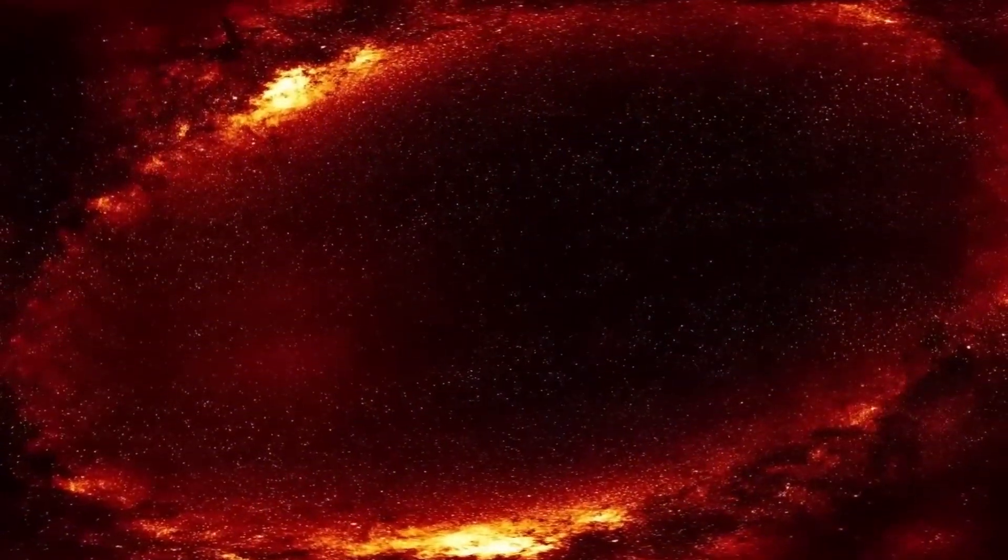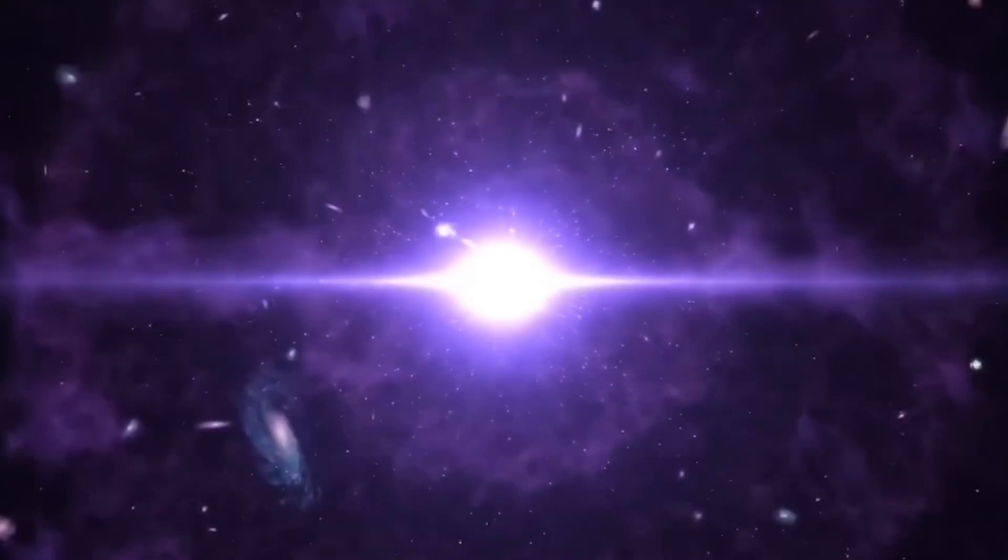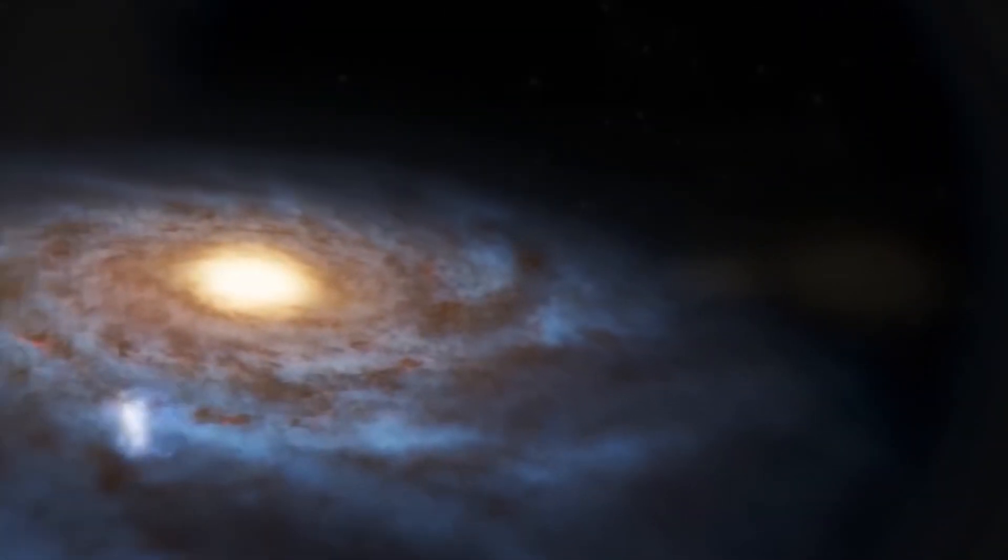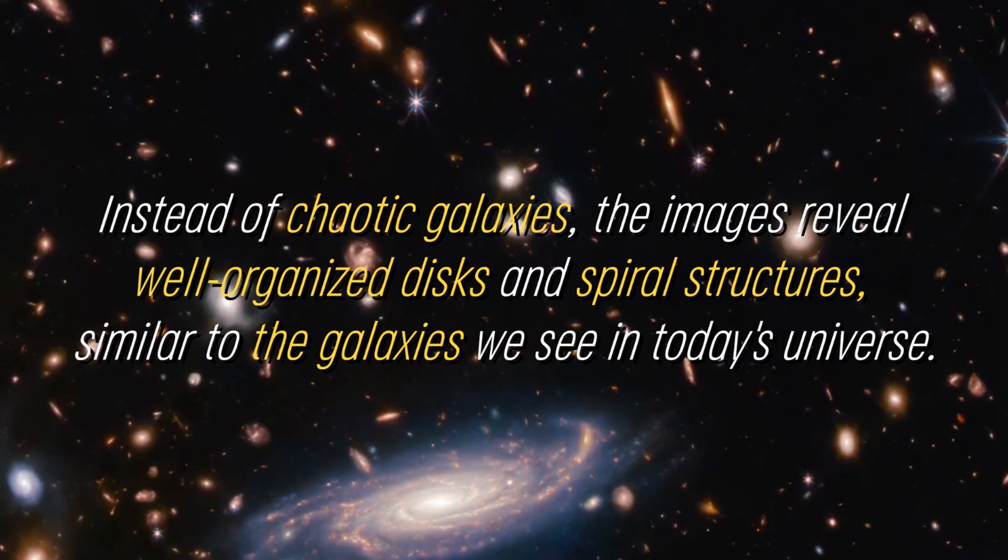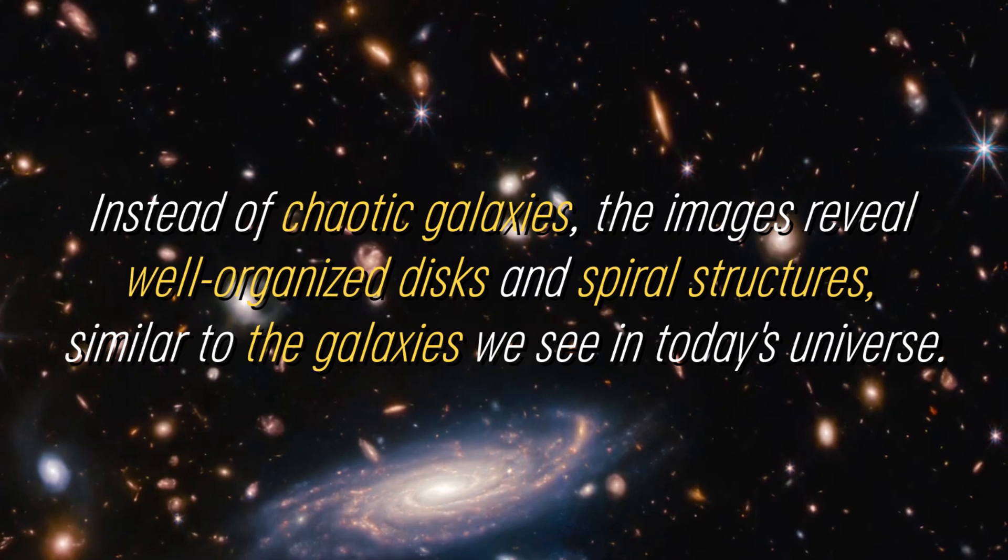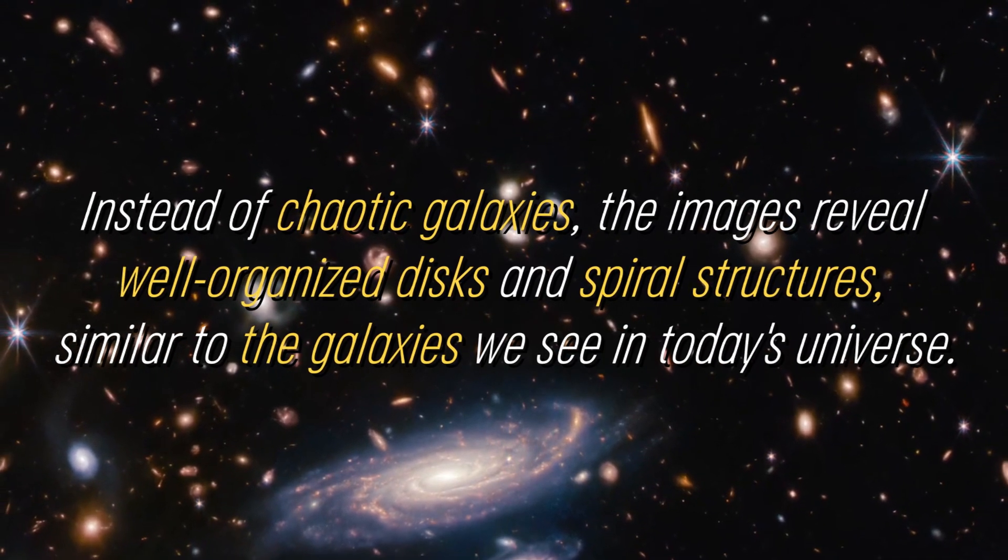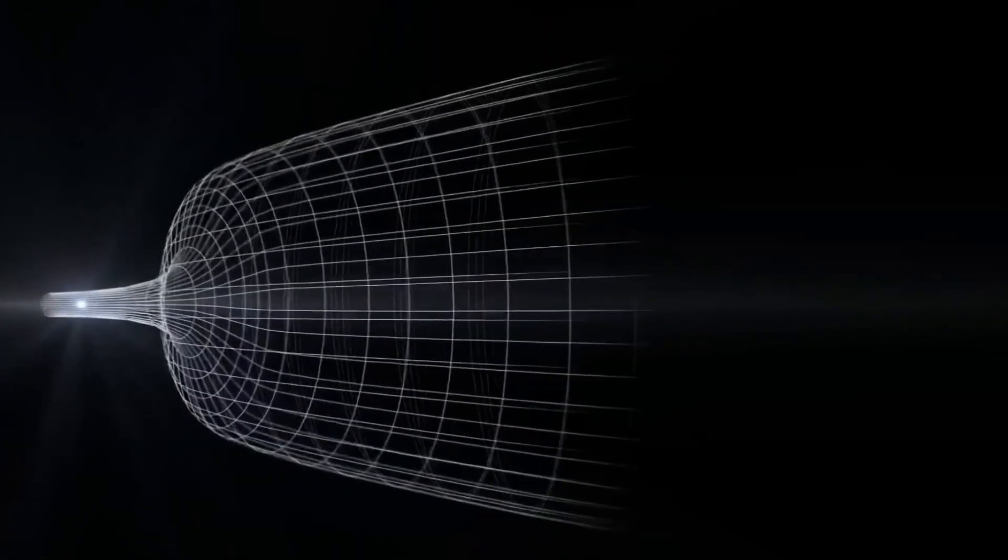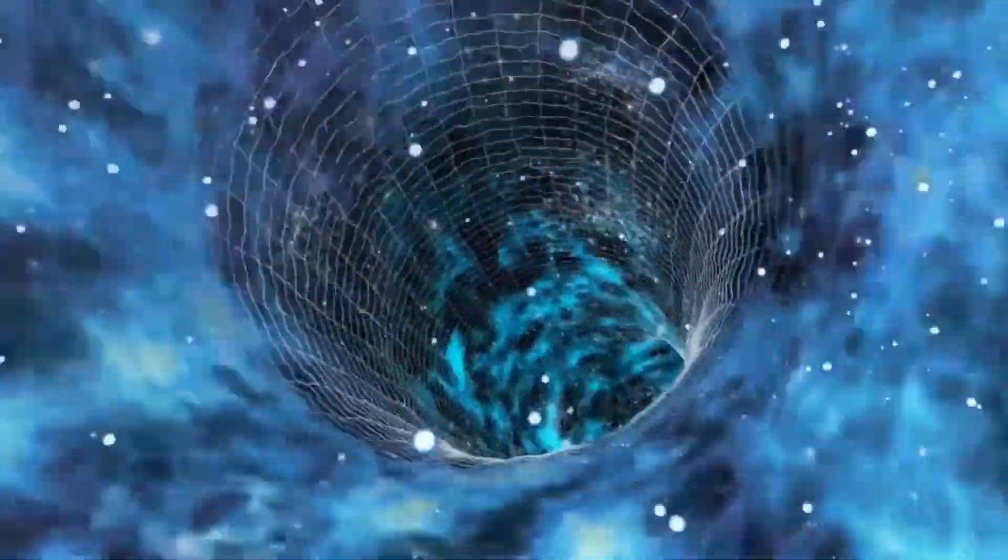Chaotic and disrupted galaxies due to multiple collisions were expected to be observed, but the images captured by JWST tell a different story. Instead of chaotic galaxies, the images reveal well-organized disks and spiral structures, similar to the galaxies we see in today's universe. This unexpected observation challenges the idea that mergers are a common process in galaxy evolution.